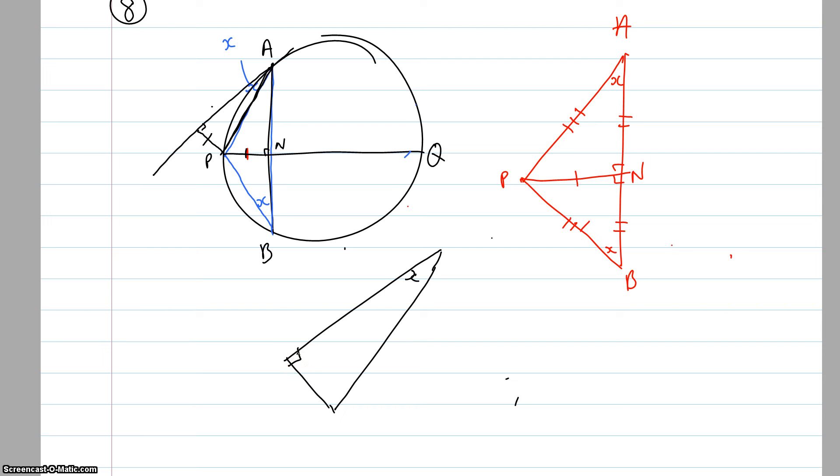That means that, because this is all the same as everything up here, that angle's the same, that hypotenuse is the same, that means that the other two sides - because the two angles are the same and one side is the same - that means that these two sides must also be the same as well. So therefore we've actually proved that PN is the same as this one, this length over here.